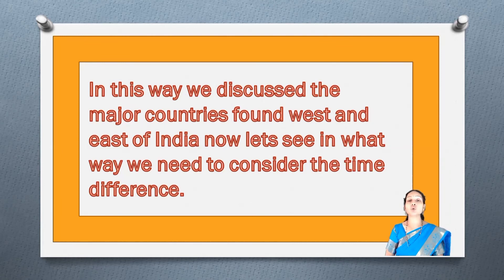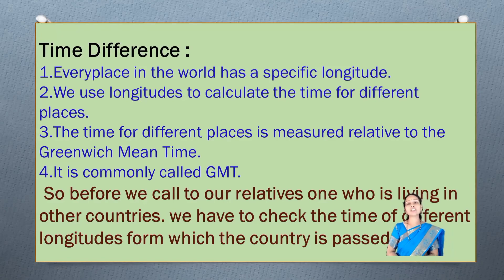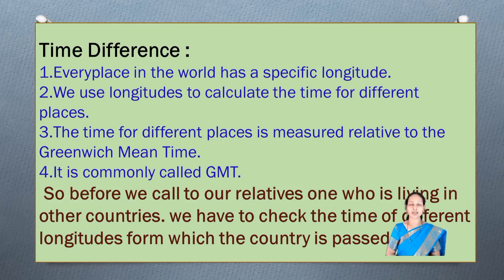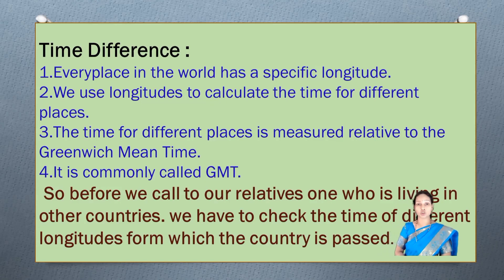Now let's see how we need to consider the time difference. Every place in the world has a specific longitude, and we use the longitude to calculate the time for different places. The time for different places is measured relative to Greenwich Mean Time, commonly called GMT. So before we call our relatives living in other countries, we have to check the time of the different longitudes through which that country passes.